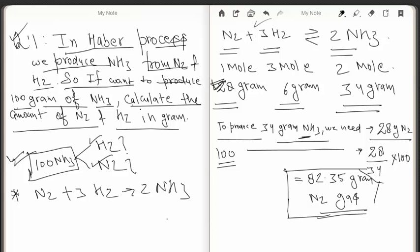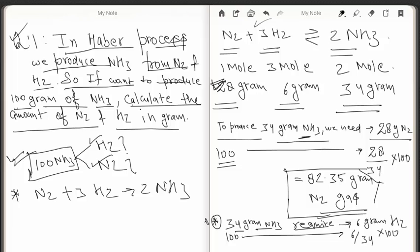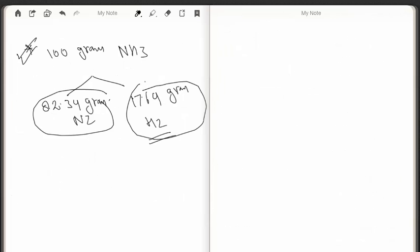Now we calculate the amount of hydrogen required. From the equation, 34 grams of ammonia requires 6 grams of hydrogen. So to produce 100 grams of ammonia, the hydrogen required is (6/34) × 100 = 17.64 grams. In the Haber process, to produce 100 grams of ammonia we need 82.35 grams of nitrogen and 17.64 grams of hydrogen.